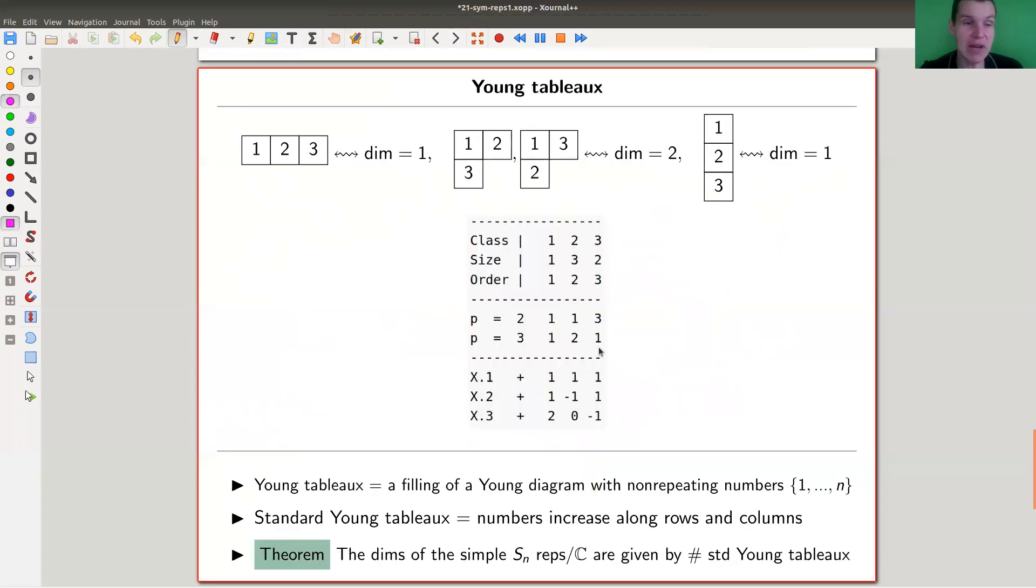So do they tell us anything beyond just some parameterizing set? And they do, but I can only sketch it right now in this video. So you can, for example, encode the dimensions of the simple representations for those partitions.